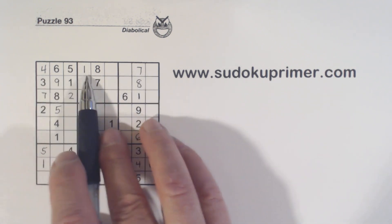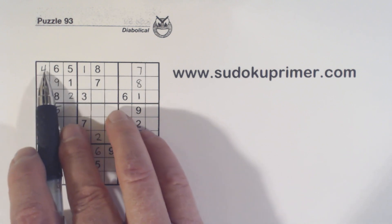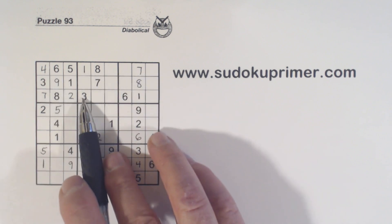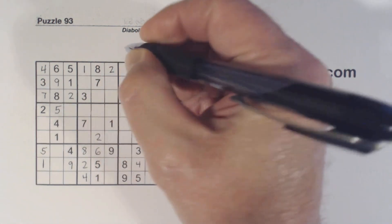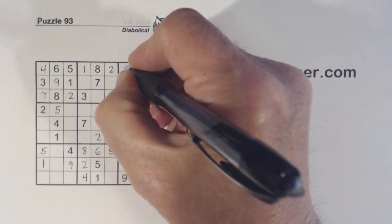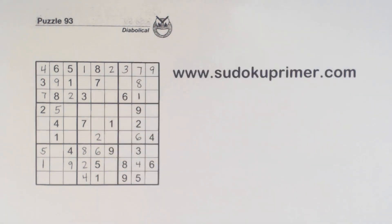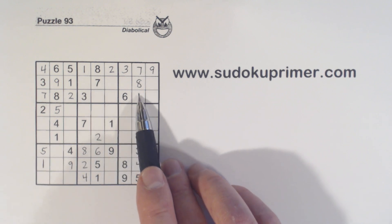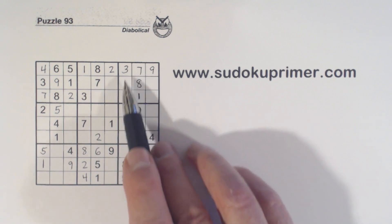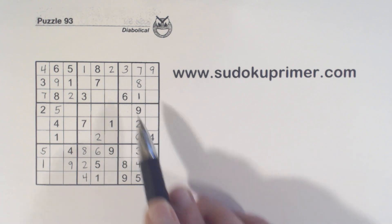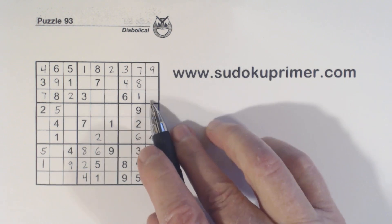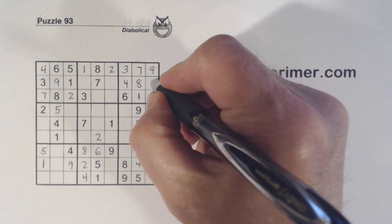Let's see what we're missing in row one — we're missing two, three, nine. Got a three there and a nine there, so we know that's a two. With that nine, we can put the three and the nine in right there. Now let's look at box three — there's only three numbers missing: two, four, and five. We've got a four there so we know that's a four. And this is a two and a five — with that two we can solve those.